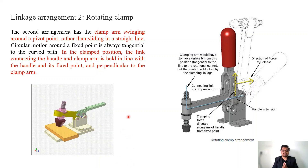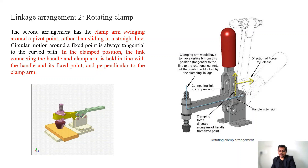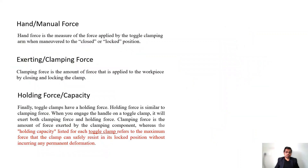Those are the two basic types: horizontal action and rotating arm action. Now let's look at some basic parameters that are very important when selecting any toggle clamp. You must know what the hand force or manual force is, what the exerting or clamping force is, and what the holding force is, because these parameters must be considered while selecting the clamp.